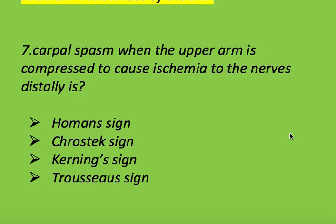Carpal spasm: when the upper arm is compressed to cause ischemia to the nerves distally, which sign is absent? Options: Homans' sign, Chvostek's sign, Curling's sign, Trousseau's sign. Right answer is Trousseau's sign.